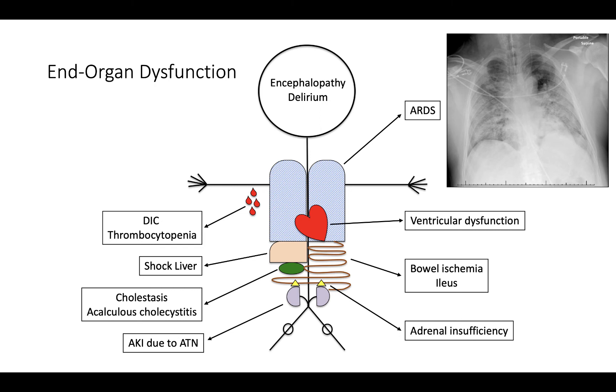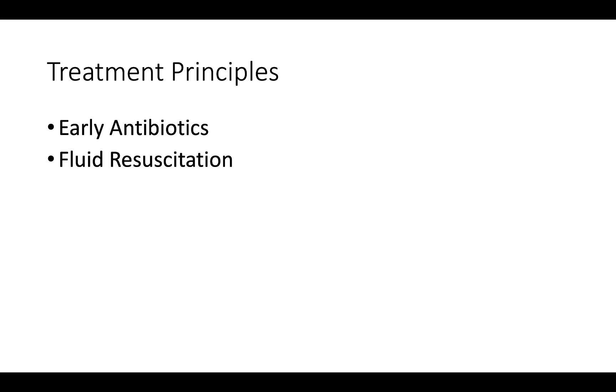We've discussed definitions of sepsis and septic shock, clinical manifestations, and end-organ damage. Next, how do we treat septic shock? Septic shock is a medical emergency requiring immediate treatment. There are four main principles in the management of septic shock: early antibiotics, fluid resuscitation, vasopressors, and source control. First, antibiotics — the life-saving intervention in sepsis and septic shock. From a study in 2014, for every one-hour delay in antibiotics in septic shock, there is a 3–7% increase in the odds of in-hospital death.